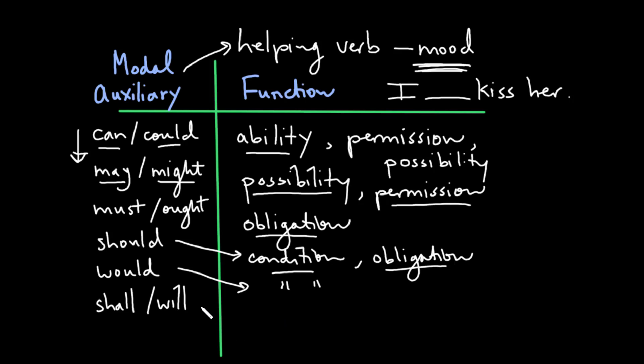Then we have shall and will, and these indicate intention and probability most often. So if you say I will kiss her, you know, maybe you're intending to do this in the future, then you can use these modal auxiliaries in this spot here.